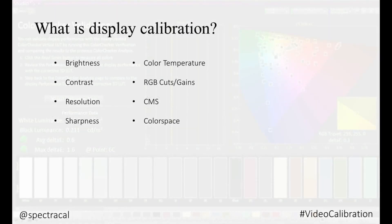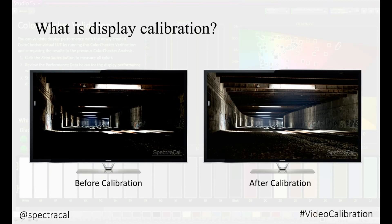Display calibration is the optimization of display settings so that the output of a display better matches an established standard, adjusting the following settings of a display to improve the look of its content. Here is a quick before and after example of how a display calibration improves the picture detail in the black levels on this display.